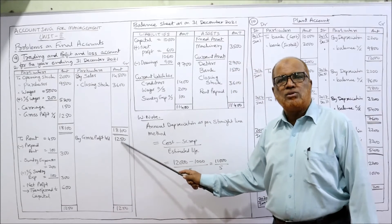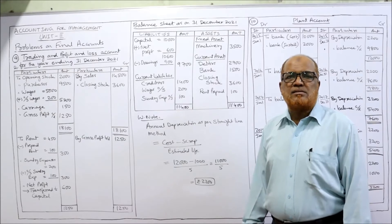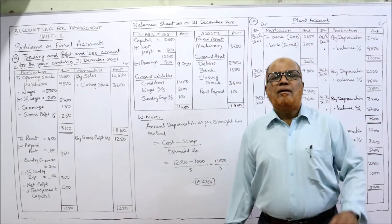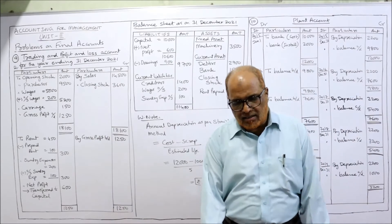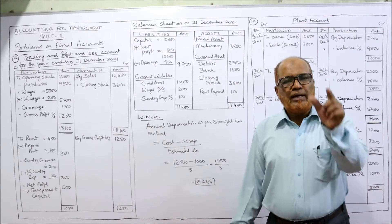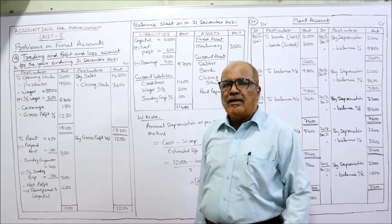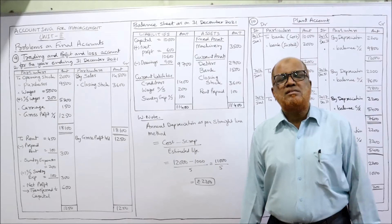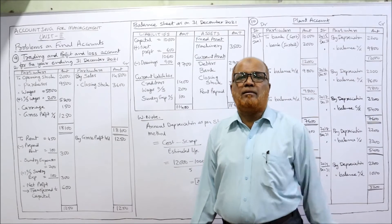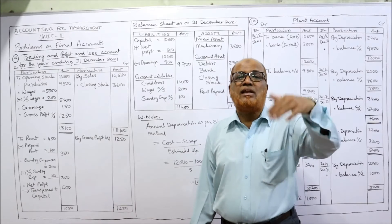This gross profit of 1,250 is carried over to the profit and loss account — gross profit brought down 1,250. The debit side will take all expenses. The first expense is rent: in the trial balance, rent paid is 450. But the last adjustment says rent is prepaid, meaning paid in advance for the next year.